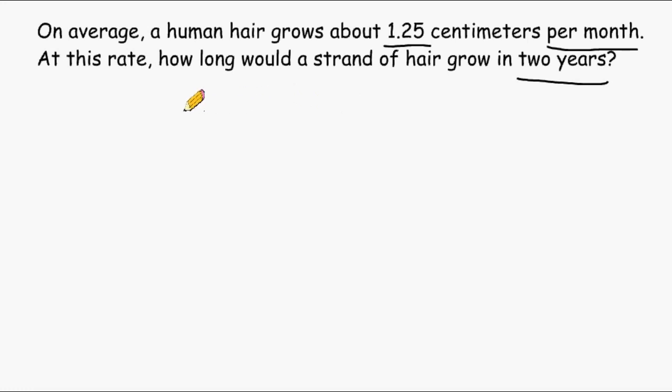Well, one year is equal to 12 months, so two years is equal to 24 months. So what we have to do is multiply 1.25 by 24. And that will tell us how many centimeters a single strand of hair grew over the span of two years.